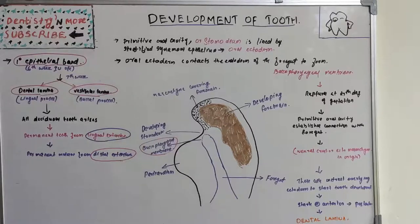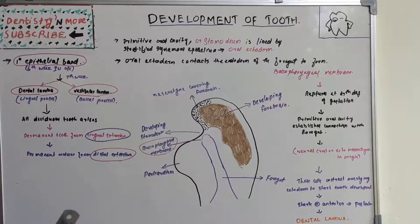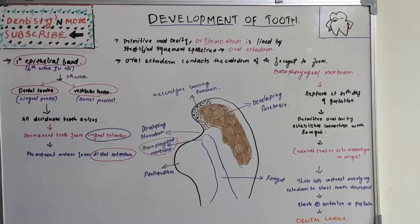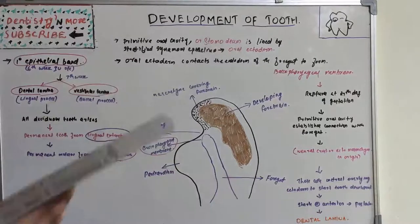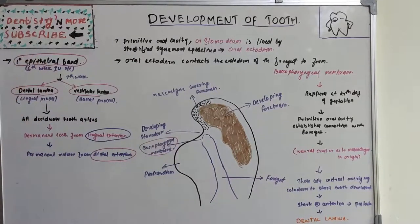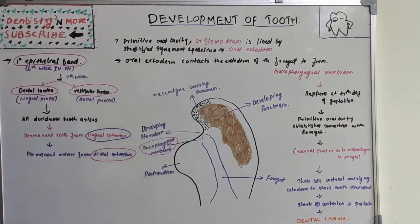Hello everyone, welcome back to another session in dentistry and more. Today's chapter is development of tooth. It is a very basic chapter in dental histology — the foundational concept. All future chapters like enamel, dentine, pulp, and alveolar bone are connected to this chapter. Understanding the basic terminologies and concepts here will make the future chapters much easier to grasp.